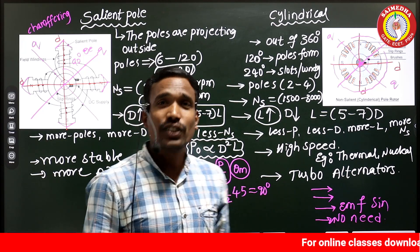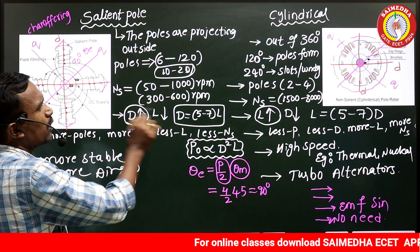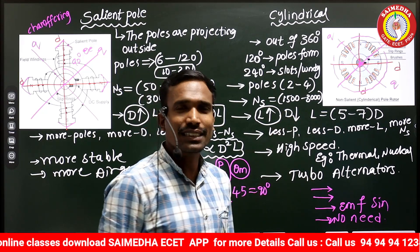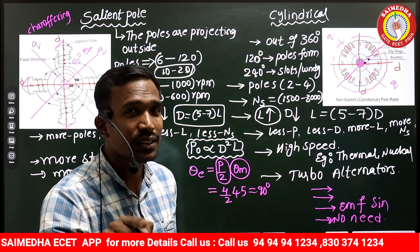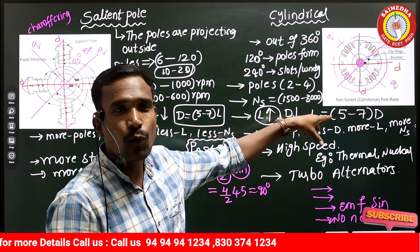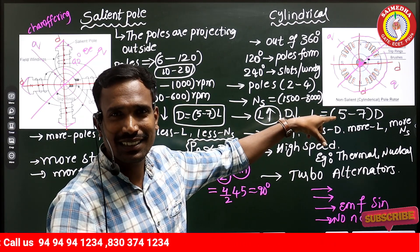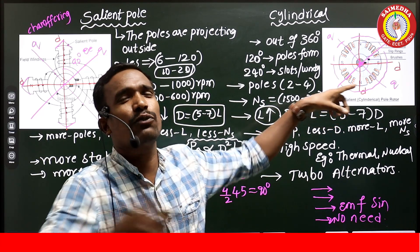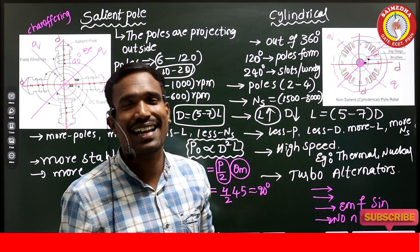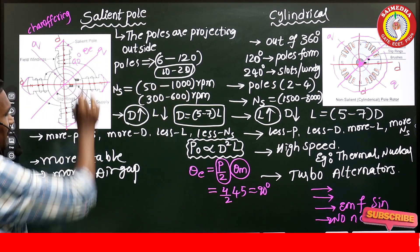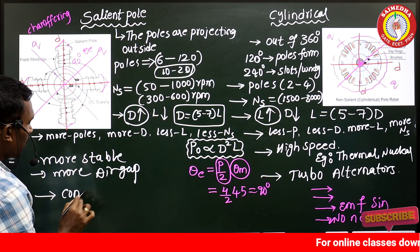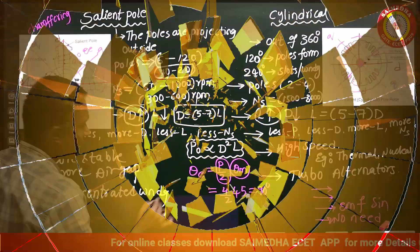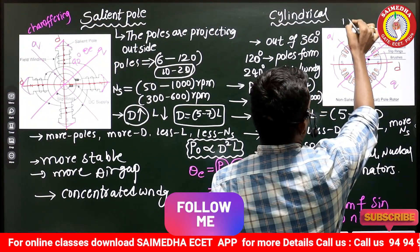Where the speed is minimum, we can use concentrated winding. Where the speed is maximum, we must use distributed winding — otherwise the winding will be dislocated or come out from the slots at high speed. So in our salient pole machine, we use concentrated winding. In the cylindrical machine, we use distributed winding.